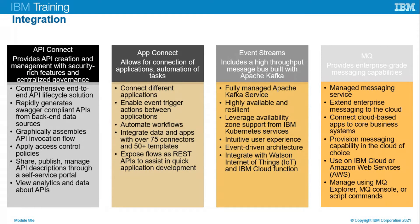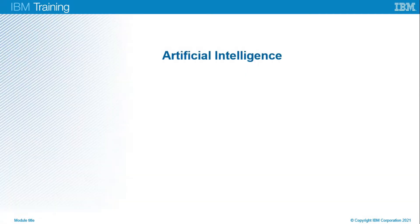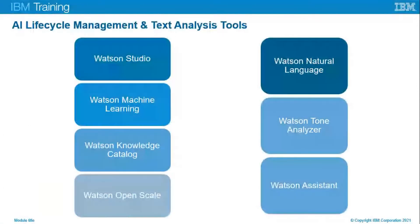Now let's look at artificial intelligence services available from IBM Cloud. There are a whole bunch of different services, including AI lifecycle management tools, text analysis tools, intelligence search tools, and speech and language services. The AI lifecycle management tools help you to build and scale AI with trust and transparency by automating the AI lifecycle management.